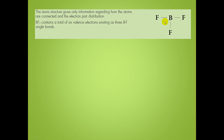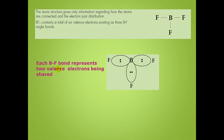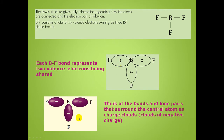The Lewis structure only gives us information about how the atoms are connected and how the electron pairs are distributed about each atom. Boron trifluoride contains a total of six valence electrons that exist as three boron-fluoride single bonds. Each boron-fluoride bond represents two valence electrons being shared. Let's think about the bonds and lone pairs that surround the central atom as clouds of negative charge, or charge clouds.